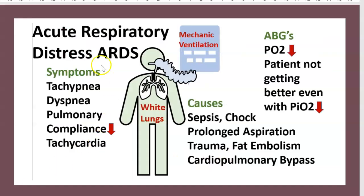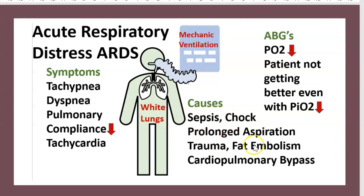Acute respiratory distress symptoms: tachypnea, dyspnea, low pulmonary compliance, and tachycardia. The first cause is sepsis, then shock, prolonged aspiration, trauma, fat embolism, and cardiopulmonary bypass.